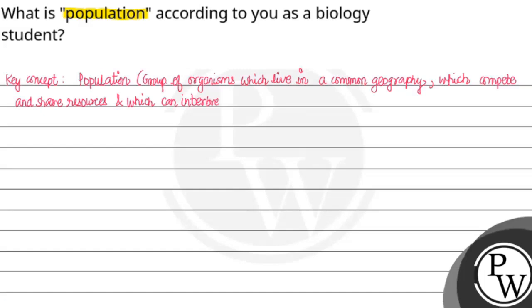among each other - उसको बोला जाता है population. क्या मतलब है इसका? For example, अगर मैं India की बात करूँ, और India में भी human species की बात करूँ, तो common geography में रह रहे हैं. यह मैं dots से represent कर रही हूं humans को.